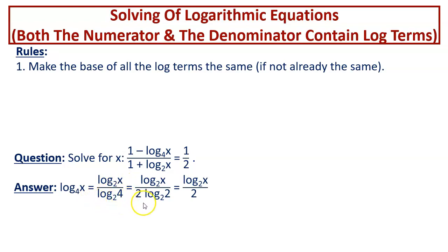And log of 4 to the base 2 is 4 is 2 squared. So we can write this as 2 times log of 2 to the base 2 which is equal to 1. The numerator stays the same. So it becomes log of x to the base 2 over 2 because this part is equal to 1.